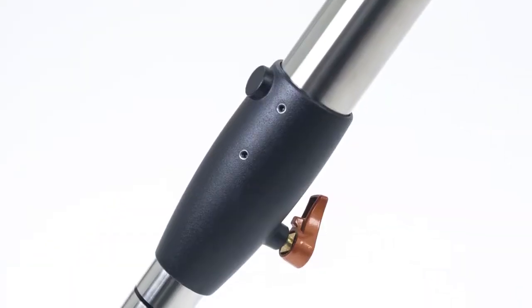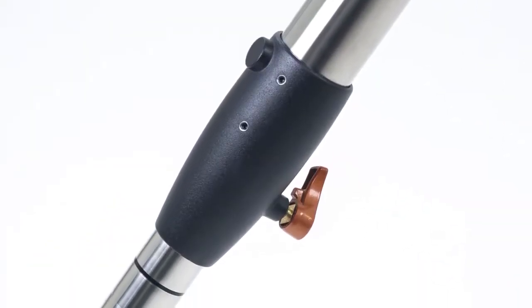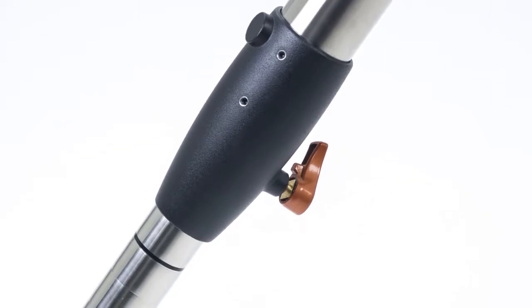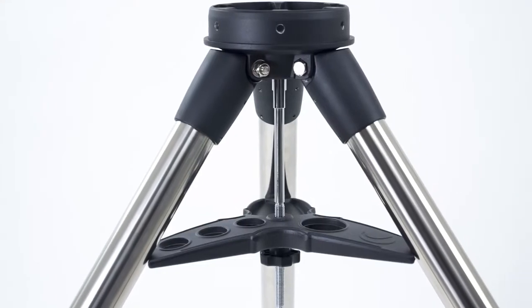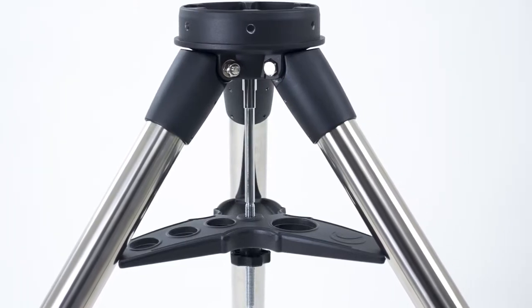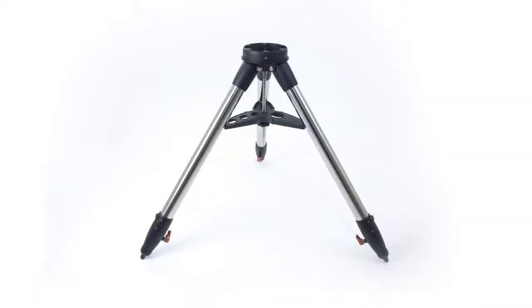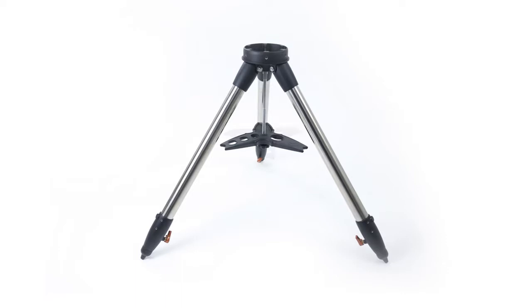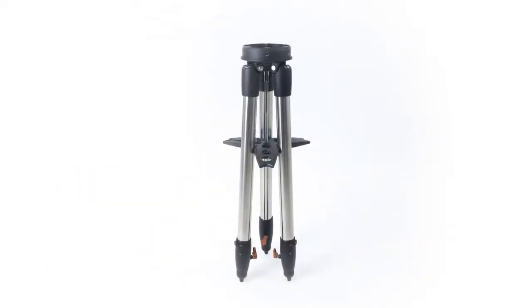The height adjustment lock levers are now inward-facing to eliminate any potential trip hazard, and now we're including a new versatile accessory tray that we like to call the jack-of-all-trays. The tray can stay installed on the tripod with the tripod legs collapsed for very quick and convenient storage.